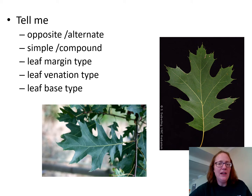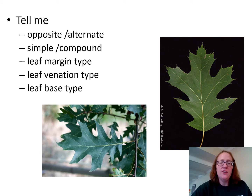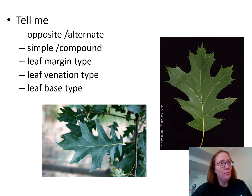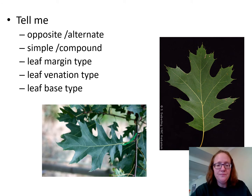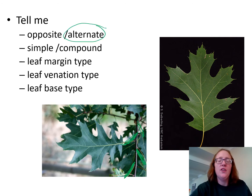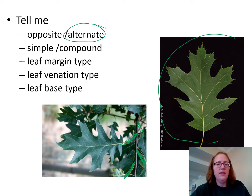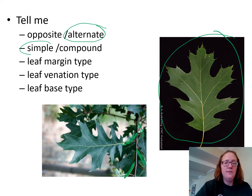Now here are some common leaves to practice identifying characteristics. The first one is northern red oak. Is it opposite or alternate? Since it's an oak — and the MAD trees, maple, ash, and dogwood, are the ones that are opposite — that's our first clue it's probably alternate. Looking at the picture, you can also see leaves coming off on alternating sides of the branch. So this one is alternate. Is it simple or compound? This is one leaf, so it is simple.